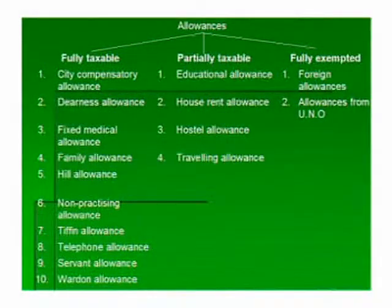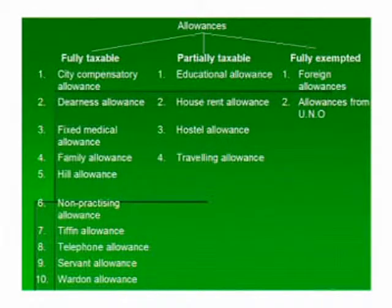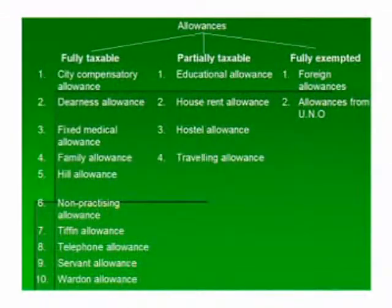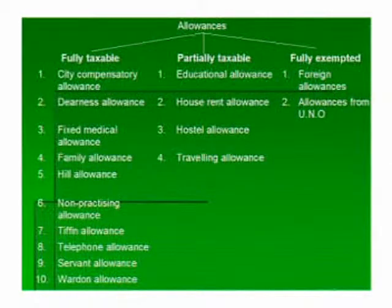The second category is partially taxable allowances — it means out of the total allowance received, a certain portion can be claimed as exempt and the remaining amount is taxable. Examples include conveyance allowance, educational allowance, and house rent allowance, where only a certain portion of those allowances is included for tax purposes.